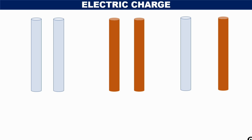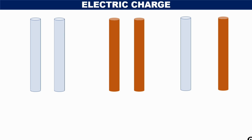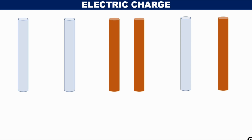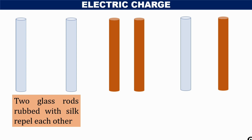After rubbing with a silk cloth, we can see that the two glass rods will repel each other. This is a strange behavior. The glass rod and silk cloth, due to rubbing, the glass rod has acquired some special property.